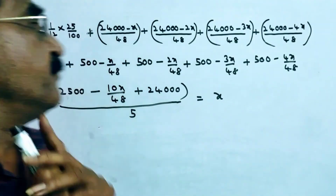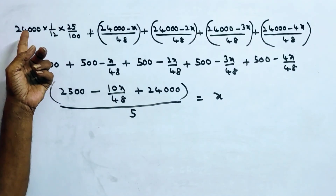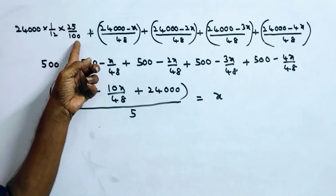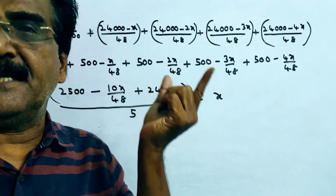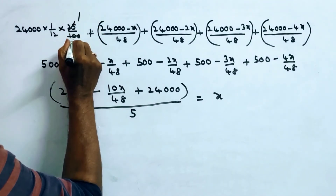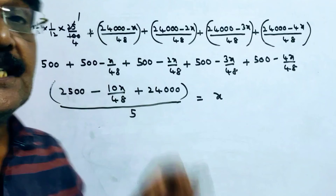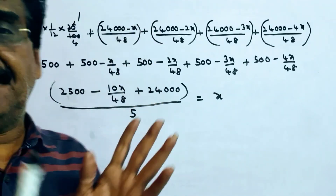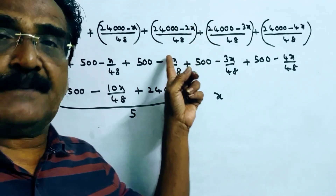Let the monthly installment be X. The interest for the first month is 24,000 × P×T×R / 100, where T is one month, so the interest is 24,000 PTR by 48. For the second month, the principal is 24,000 minus X (since he has paid X after one month), so the interest is (24,000 − X) by 48.